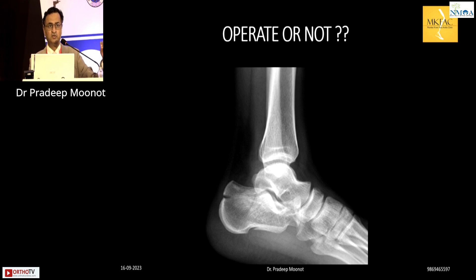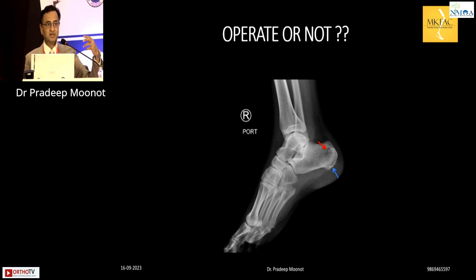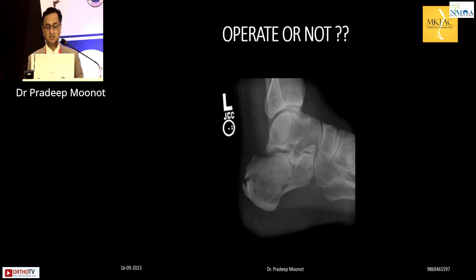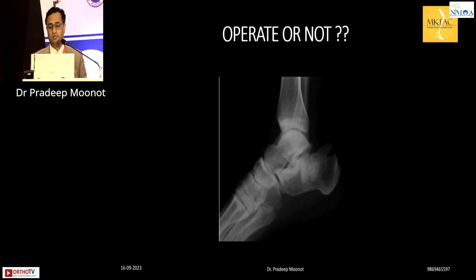Looking at case examples: a fracture with hardly any displacement that is extra-articular does not need surgery. A medial or lateral process fracture — get a CT; if significantly displaced, insert a screw, otherwise leave it. A fracture with no significant displacement and extra-articular — no surgery needed. However, a fracture with significant depression that is intra-articular, with the articular surface at almost 90 degrees — operate on that.